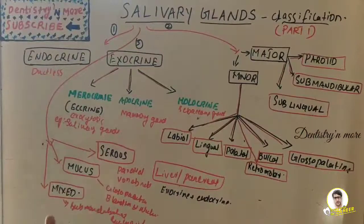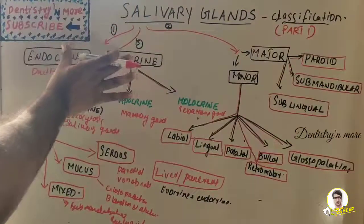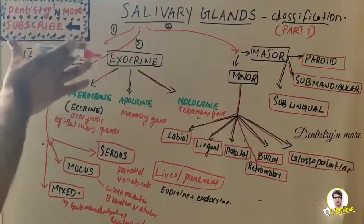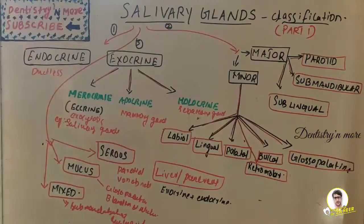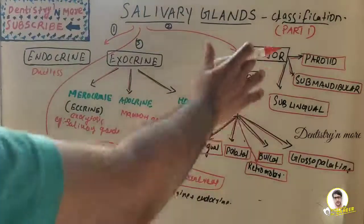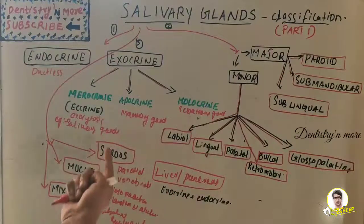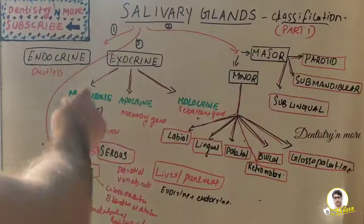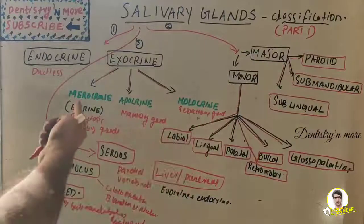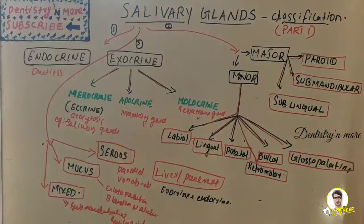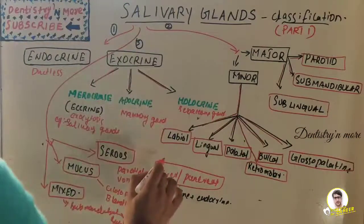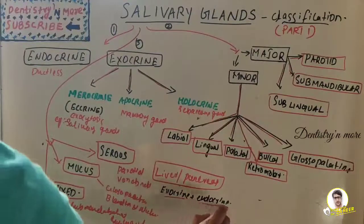So we've learned the general classification: endocrine and exocrine glands — endocrine are ductless and exocrine have ducts. The basic salivary gland classification includes major glands (parotid, submandibular, and sublingual) and minor glands, then classification by type of secretion (serous, mucous, or mixed), and exocrine glands classified as merocrine, apocrine, and holocrine.